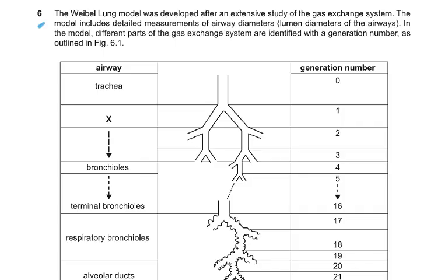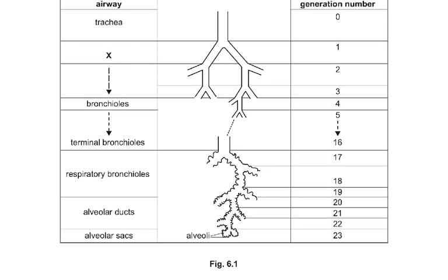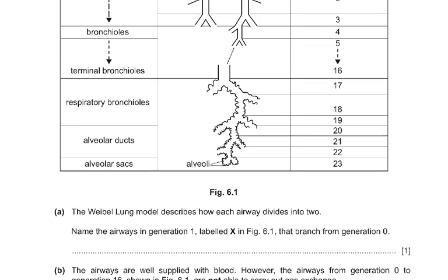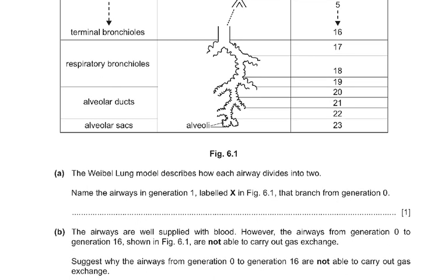The Weber-Lung model was developed after an extensive study of the gas exchange system. The model includes detailed measurements of airway diameters — the lumen diameter of the airways. Different parts of the gas exchange system are identified with a generation number: trachea is generation 0, followed by generations 1 through 4, then bronchioles, terminal bronchiole, respiratory alveolar duct, and alveolar sacs. The Weber-Lung model describes how each airway divides into two.